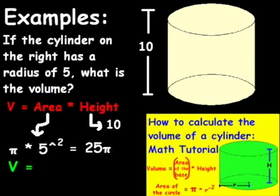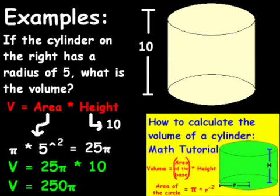We write the equation down there in green. V equals 25 pi multiplied by 10. And if we go ahead and simplify that down, V is going to equal 250 pi. And our answer here is volume equals 250 pi.